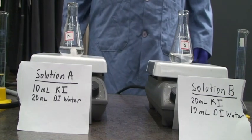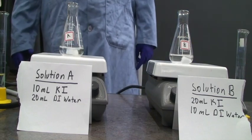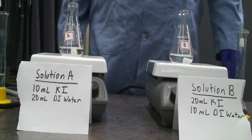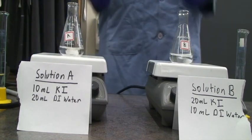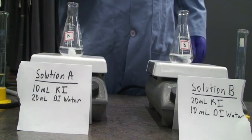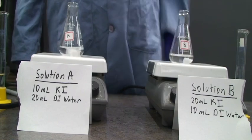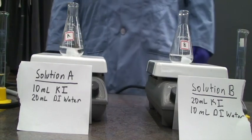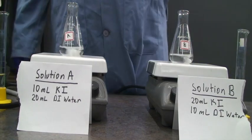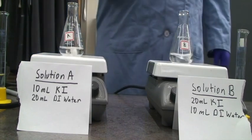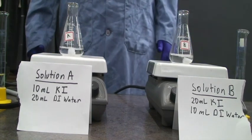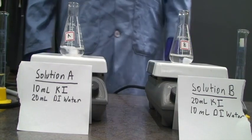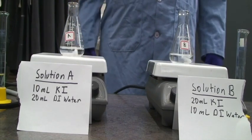We're going to look at part one of the procedure. I've set up two Erlenmeyer flasks: solution A on my right contains 10 mL of KI and 20 mL of deionized water, and solution B contains 20 mL of KI and 10 mL of deionized water. Both solutions are the same volume, but solution A contains less KI than solution B, so we can see how the concentration of KI affects the rate of this reaction.